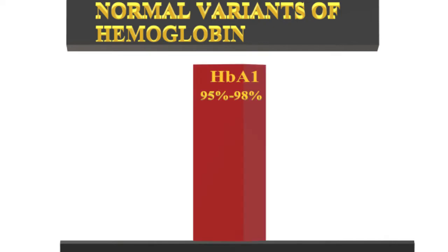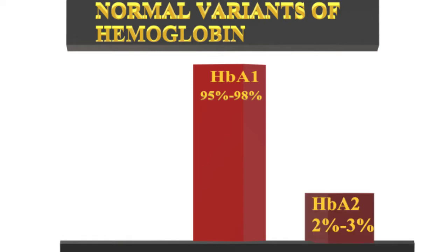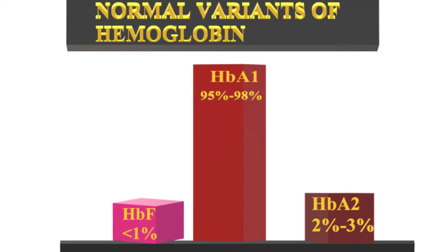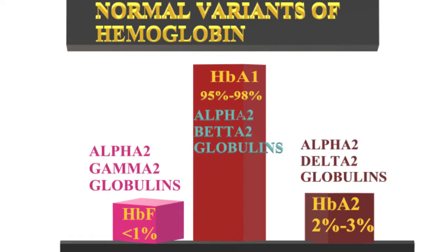In normal adults, around 97% have type A1 hemoglobin containing two alpha and two beta globulin chains. Type A2 are 2 to 2.5%, having two beta and two delta chains, and HbF in small amounts having two beta and two gamma globulin chains.